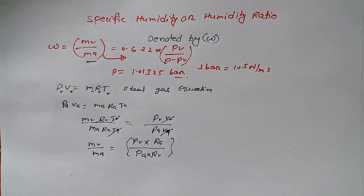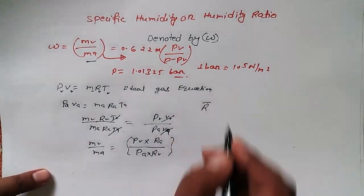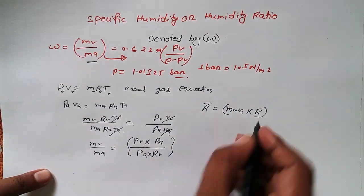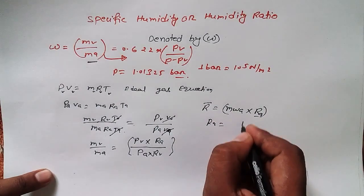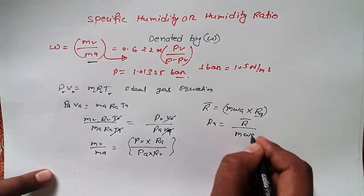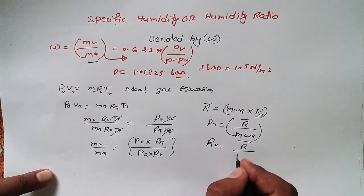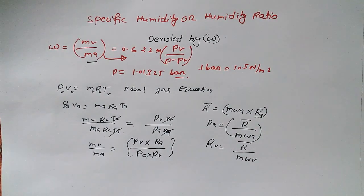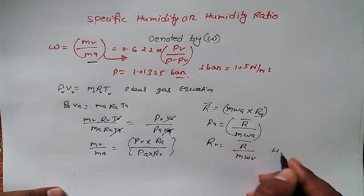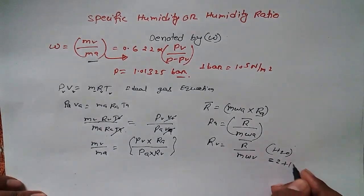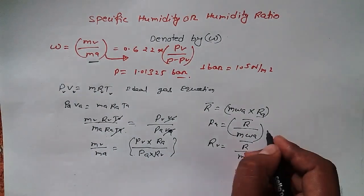Now, what is R? R is the gas constant. The universal gas constant R-bar relates as: Ra equals R-bar divided by molecular weight of air, and Rv equals R-bar divided by molecular weight of vapor, which is water. The molecular weight of water is 18 — that is 2 for hydrogen and 16 for oxygen — and for air it is 29.